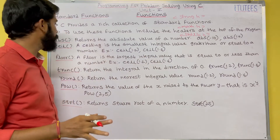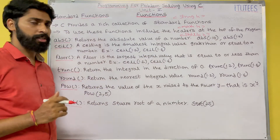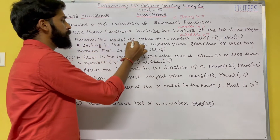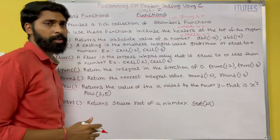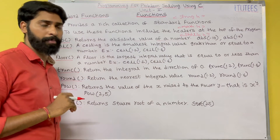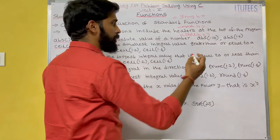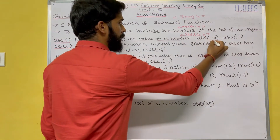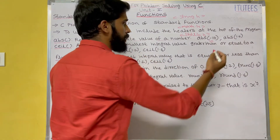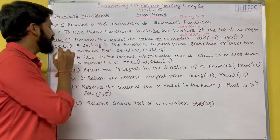Now we see some of the standard functions. First is abs() — it returns the absolute value of a number. That means if you give a negative number it still returns the positive number. So abs(-10) returns 10. If you give abs(10) then also it returns 10.